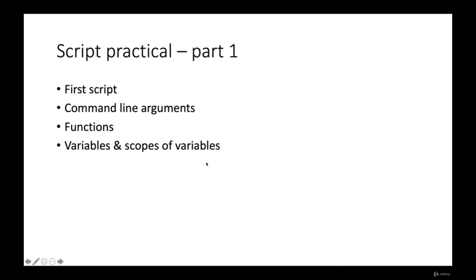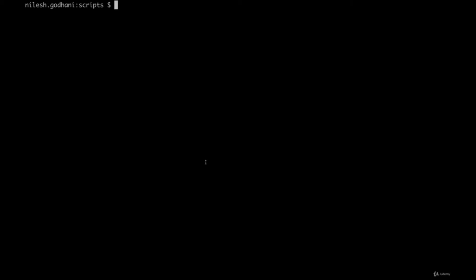Hello and welcome back. In this session we'll do some practical work on shell script and learn about command line arguments, functions within a script, variables, and variable scopes. Let's move to the shell prompt. I'm going to create a very basic shell script — I'll open a vi editor and give it the filename 'learn.sh'. You can write a shell script in any IDE or any text editor of your choice — the editor can be a CLI editor or a GUI editor. Currently I'm writing in vi.